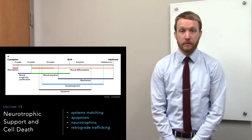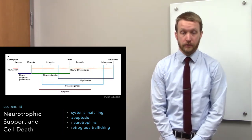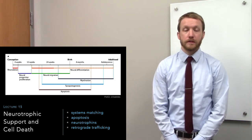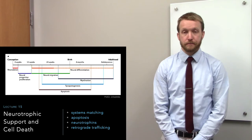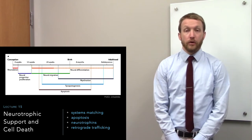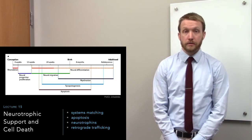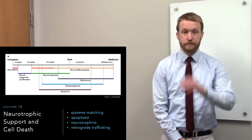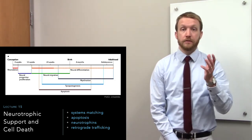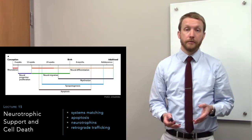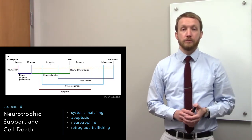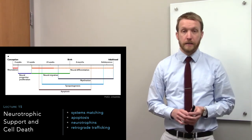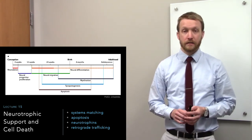The type of death we're talking about today is going to be apoptosis. There are really two types and we'll distinguish those in the first part. Then we'll go through the mechanism of apoptosis. Finally we'll cover neurotrophic support, which is going to involve the binding of neurotrophins to their receptors and the removal of receptors — in some cases at very distant sites — and the retrograde transport back to the cell body.